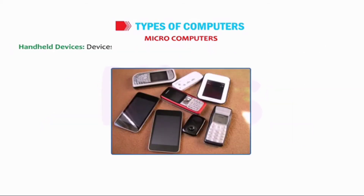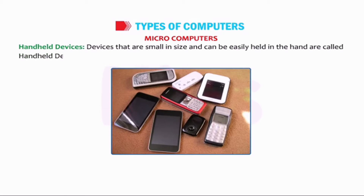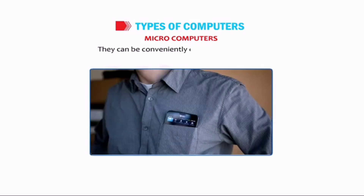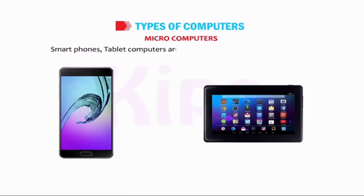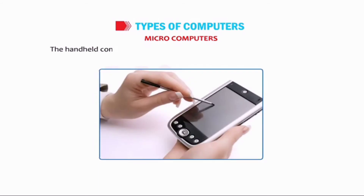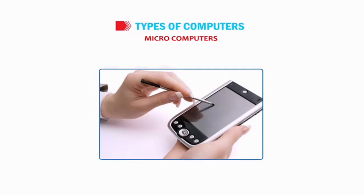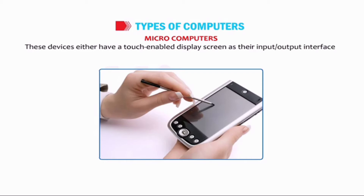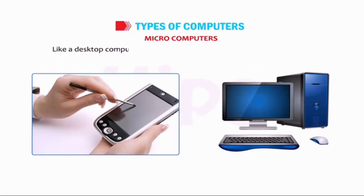Handheld Devices: devices that are small in size and can easily be held in the hand are called handheld devices. They can be conveniently carried in the pocket. Smartphones and tablet computers are a few examples of handheld devices. The handheld computers are also called Personal Digital Assistants, or PDAs. These devices either have a touch-enabled display screen as their input or output interface, or a simple display unit with a keyboard. Like a desktop computer, these devices can be used to perform any task.